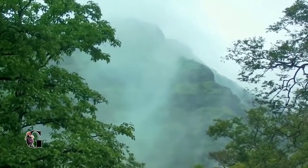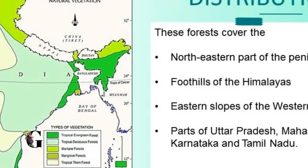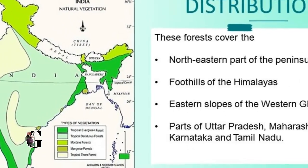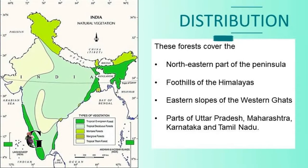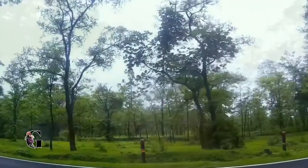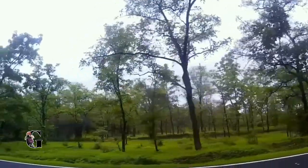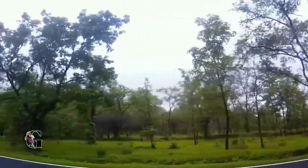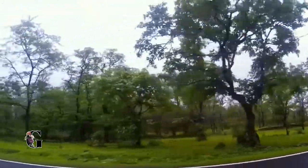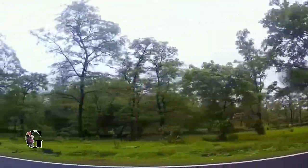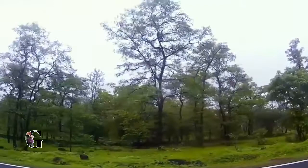These forests exist mainly in the eastern part of the country, along the foothills of the Himalayas, and are also found in Jharkhand, Chhattisgarh, and on the eastern slope of the Western Ghats. The trees of the moist deciduous forest have a lot of unique features.